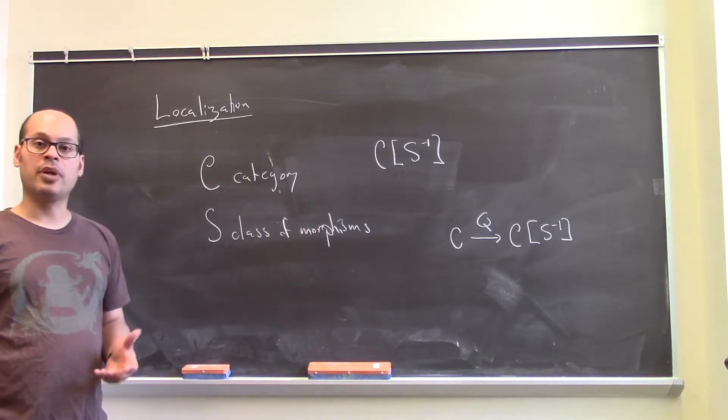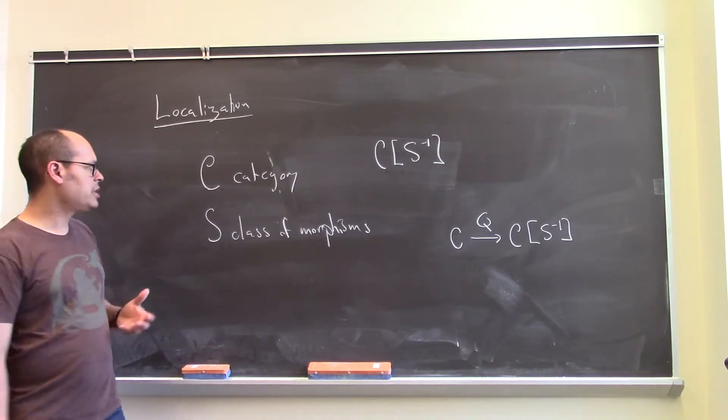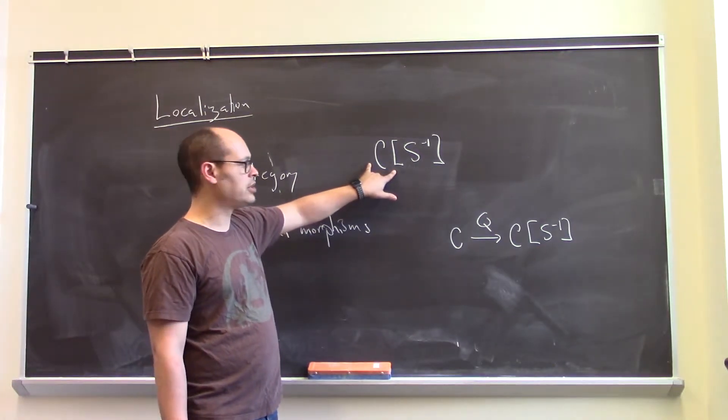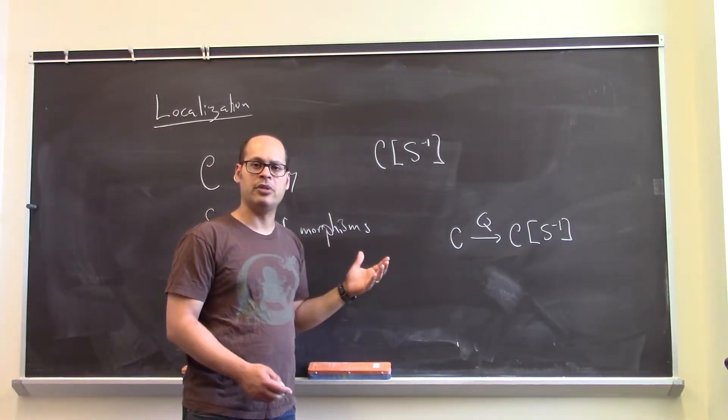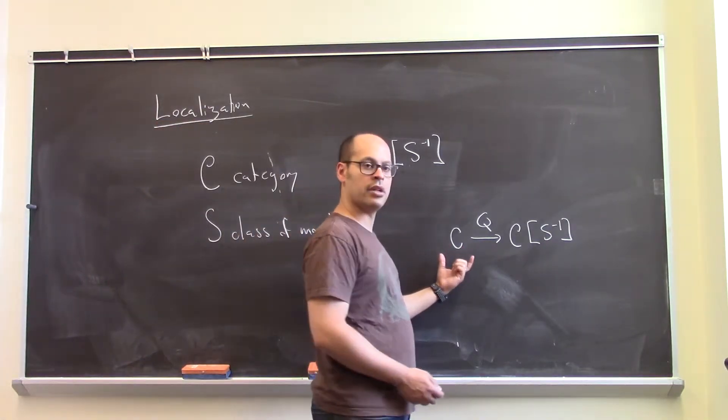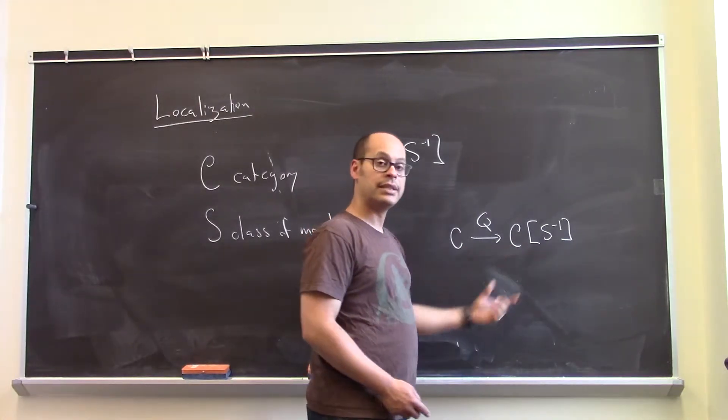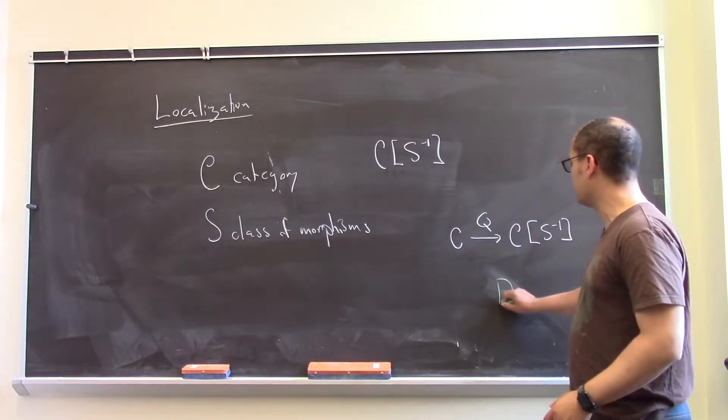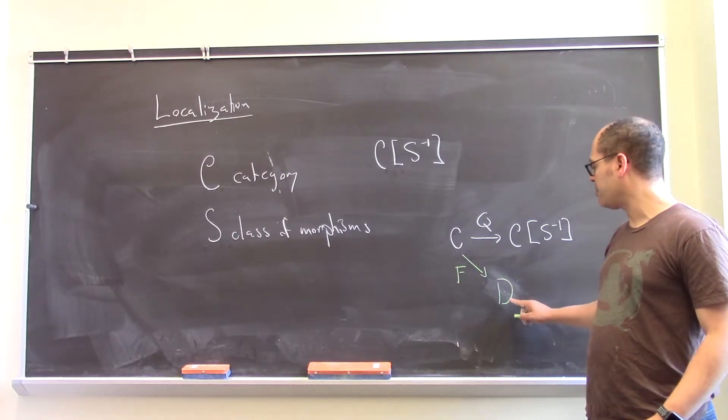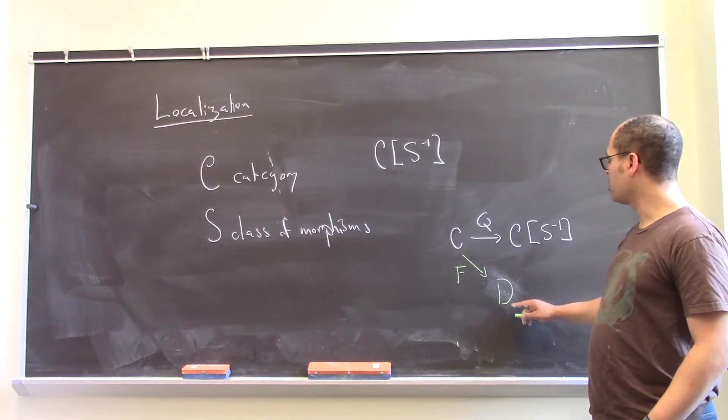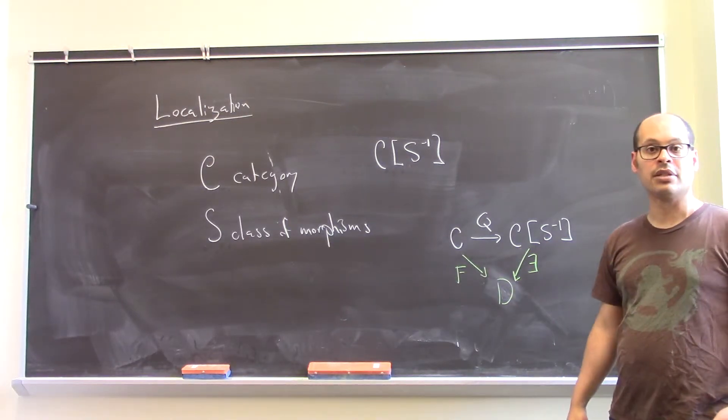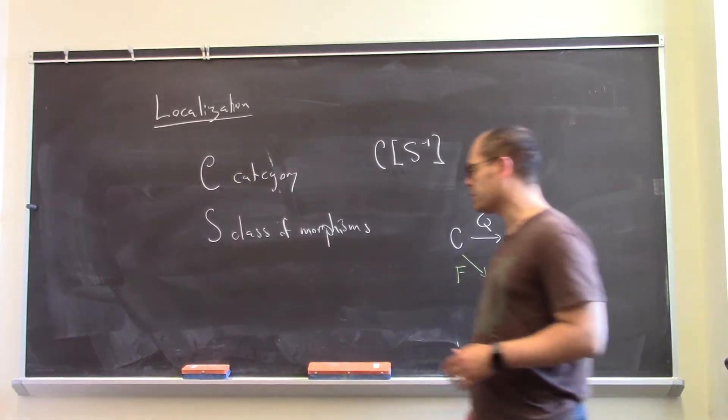So now that we know what the quasi-isomorphisms are, we just need to know what it means to invert them. So given a category and a class of morphisms, what should it mean to construct a new category C[S^{-1}], where we've inverted, made into isomorphisms, the morphisms in S? So this will be a new category that comes with a canonical functor from your original one to it, such that if I have any other category, say D, and a functor from C to D, such that in here the morphisms in S end up being isomorphisms in D, then there should exist a unique map from the localized category to D making this diagram commute, on the nose, not up to natural equivalence, just on the nose in fact.